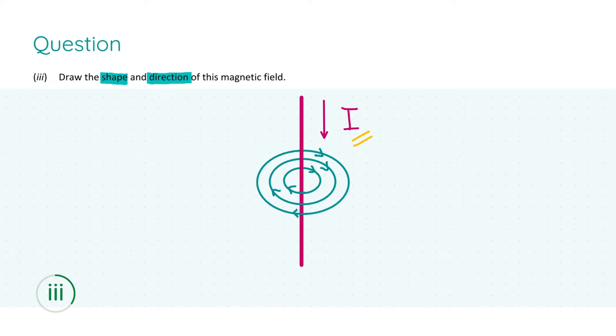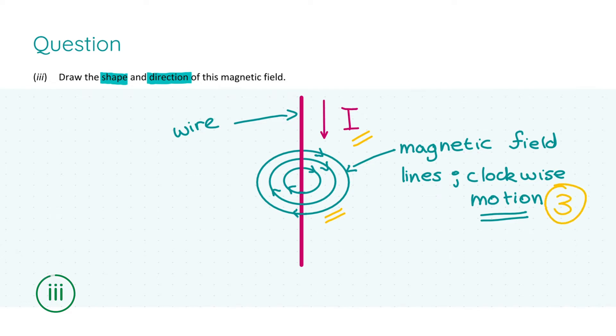How I determined this? I just pointed my thumb of my right hand downwards and the rest of my fingers curled inward showing that the magnetic field lines go around in clockwise direction. Very important to label all aspects of your diagram as I have here: the motion and the direction of the magnetic field lines, what my current carrying conductor is, and also what way the current is flowing. You get three marks for direction and three marks for the shape, i.e. circles.